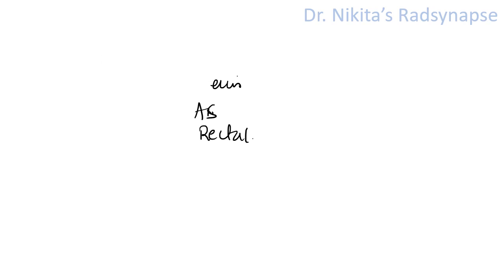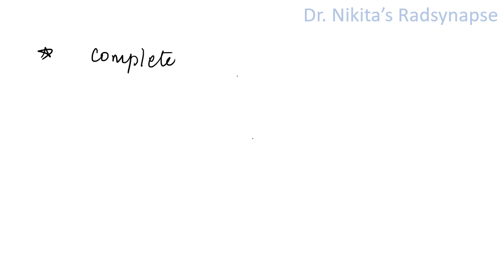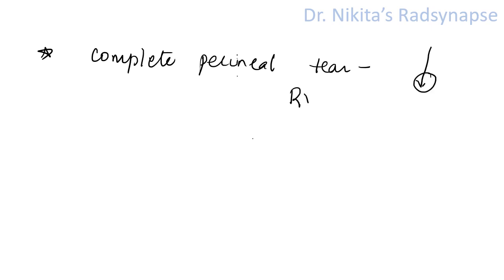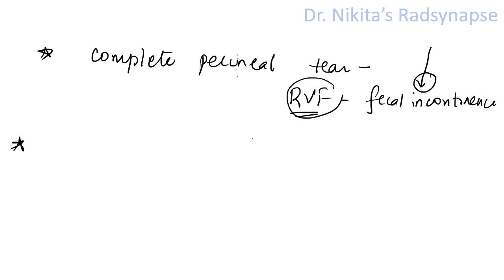Some more important clinical points: if a female presents with flatus incontinence or fecal incontinence, suspect a rectovaginal fistula. Complete perineal tear is a common cause of rectovaginal fistula, since it extends from the vagina to the rectum. You may get a clinical scenario where a woman presents three months after delivery with fecal incontinence since the day of delivery — suspect rectovaginal fistula due to complete perineal tear.